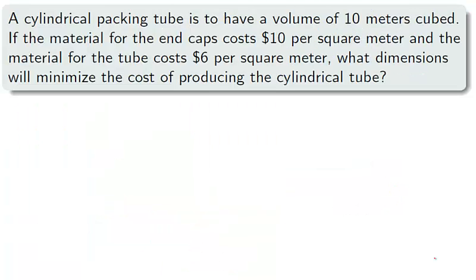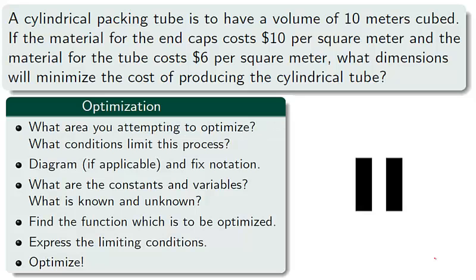Let's take a second example. A cylindrical packing tube is to have a volume of 10 meters cubed. If the material for the end caps costs $10 per square meter, and the material for the tube costs $6 per square meter, what dimensions will minimize the cost of producing this cylindrical tube? Now take a minute to challenge yourself. Pause the video and attempt to minimize the cost in constructing the tube, but be sure to follow these steps outlined in the fence example.